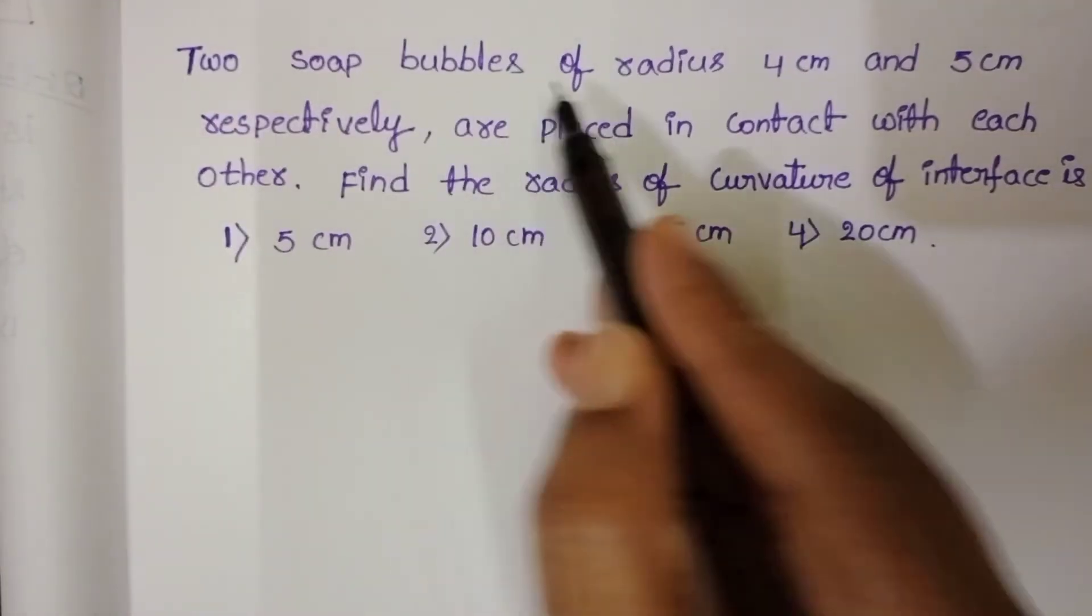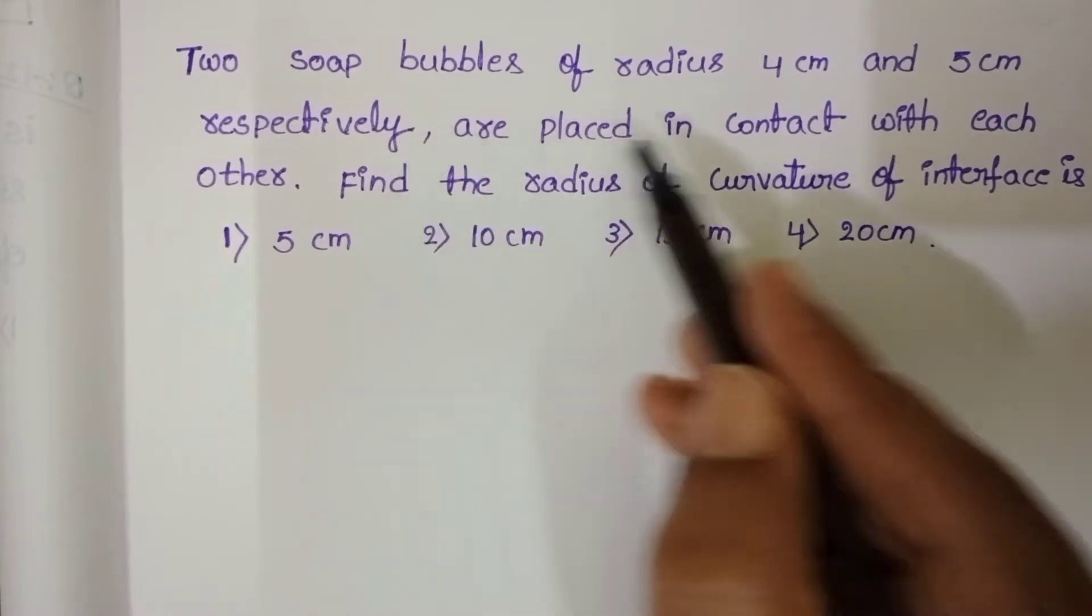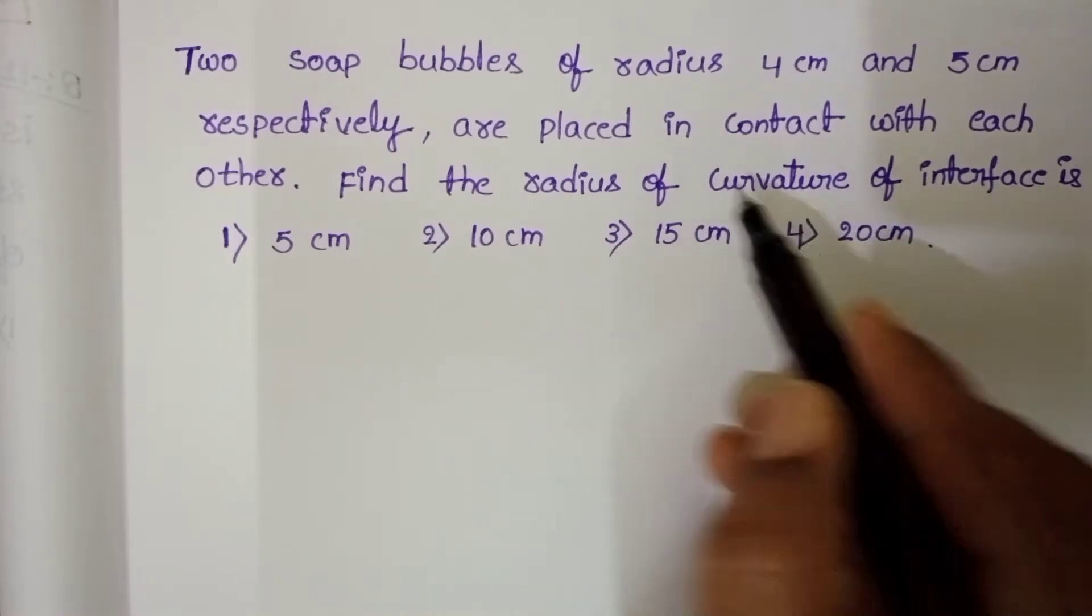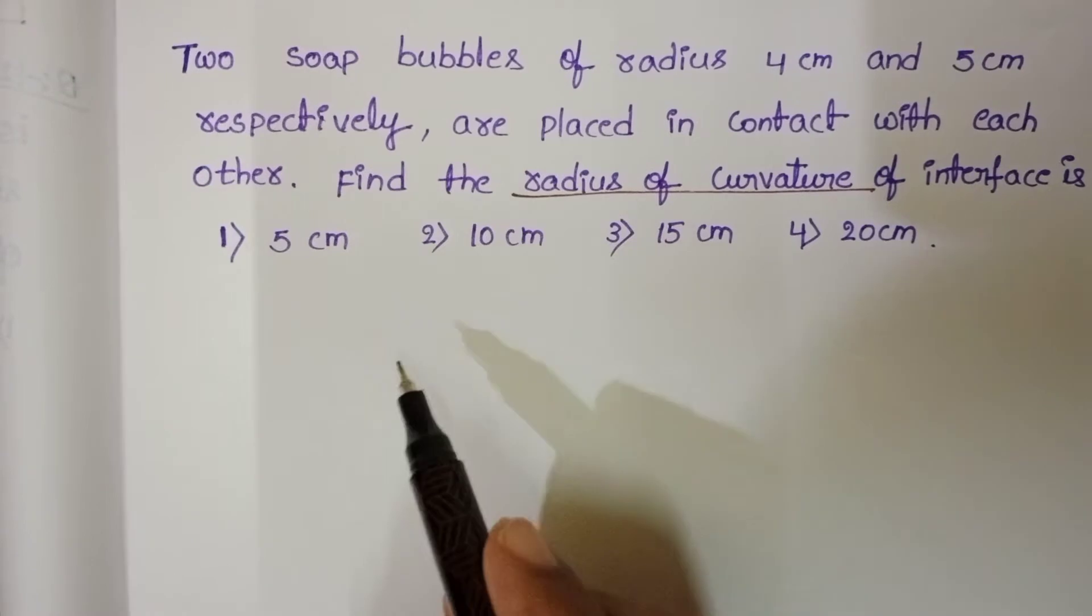Two soap bubbles of radius 4 cm and 5 cm respectively are placed in contact with each other. Find the radius of curvature of interface. This discussion is from fluid mechanics surface tension topic.